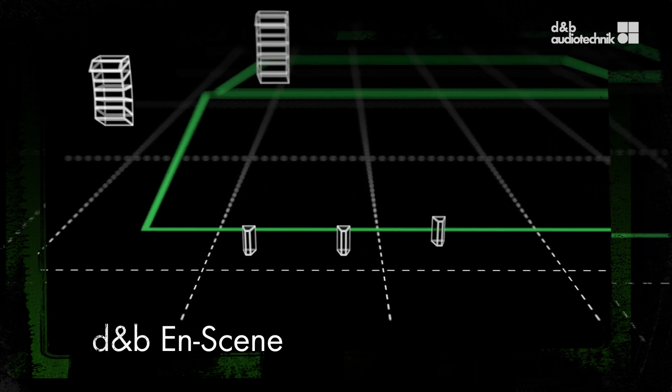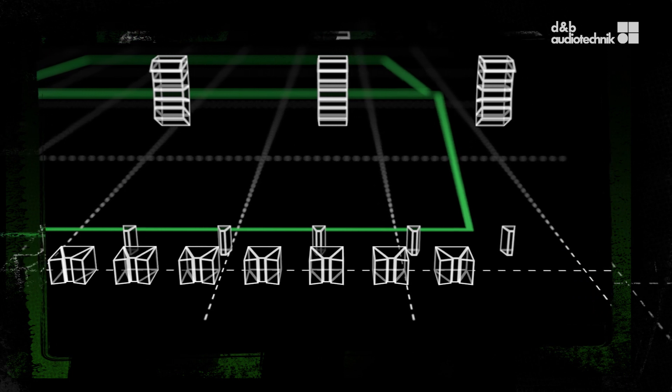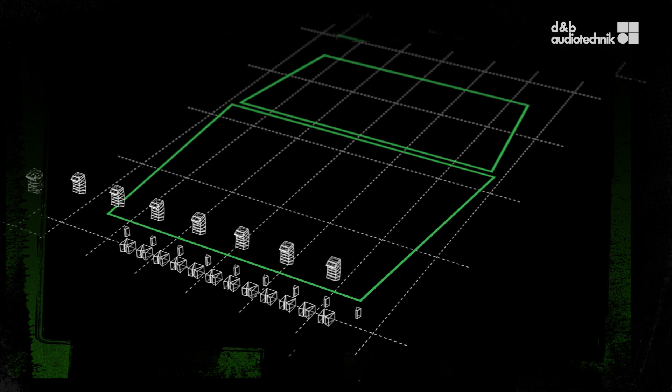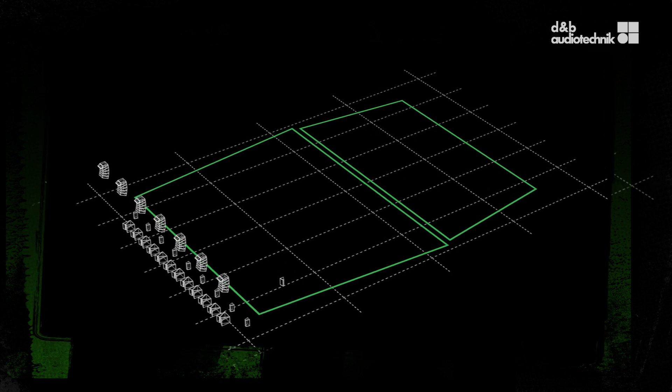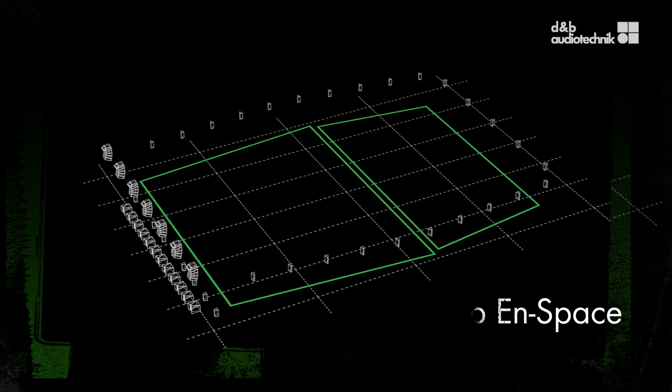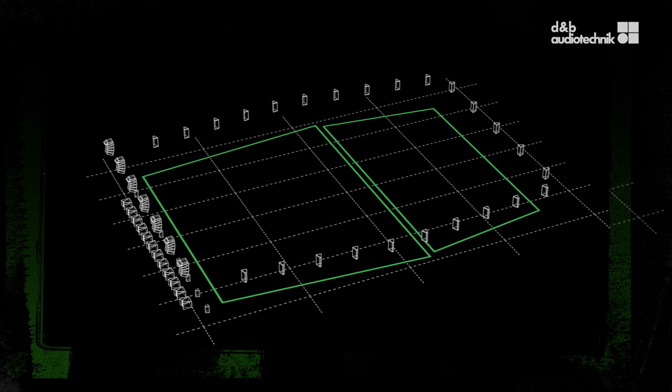DMB Soundscape system designs can be as flexible as the application requires. Using a 180° stage-front system, EndScene allows for the creation of precise spatial experiences that are a pleasure for the senses. Adding more loudspeakers builds a 360° system to create acoustic environments with EndSpace, or expand the EndScene canvas around the audience.